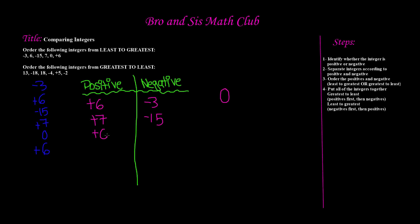Positive 6 is a positive number. So now that we have separated them, step number 3 says: order the positives and negatives, least to greatest or greatest to least, depending on what the question asks. This question asks least to greatest. In the positives we have two 6s, so we write 6, 6, and then 7. For negatives, remember this rule: the smaller the number, the greater the value. So negative 3 is actually greater than negative 15. For least to greatest, we write negative 15 first, then negative 3.